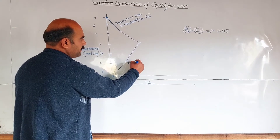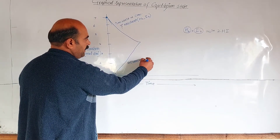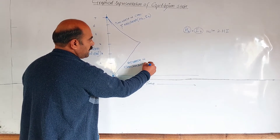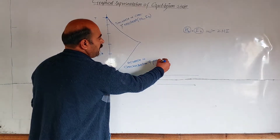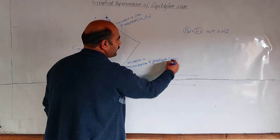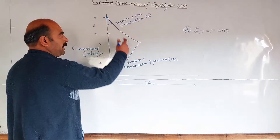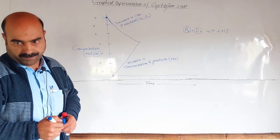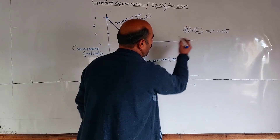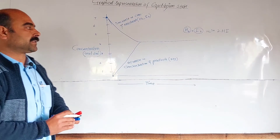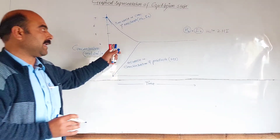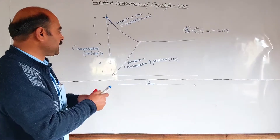The concentration of products increases with time. After some time, no further change occurs in the concentration of both the reactants and the products — equilibrium is reached.